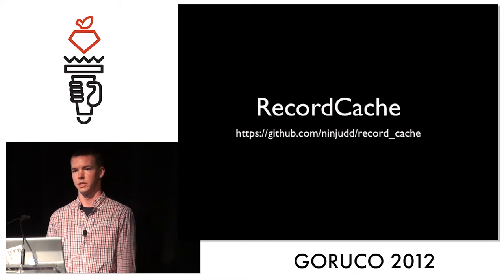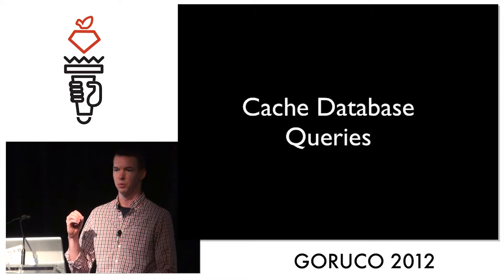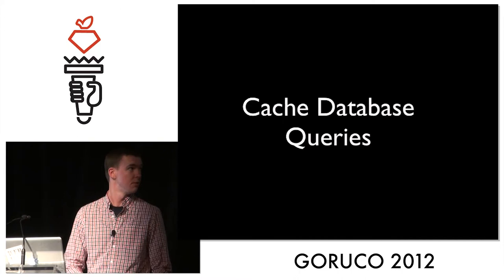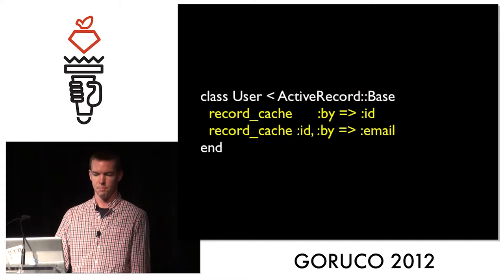Record cache does database query caching. There are other similar libraries — CacheMoney, I'm sure you've probably heard of as well. But the idea is that we want to cache at the lowest level we can inside of Rails, which is basically where we are firing queries off to the database. Here's a sample model — just a simple user, hopefully you all recognize that. Let's look at it one step at a time.